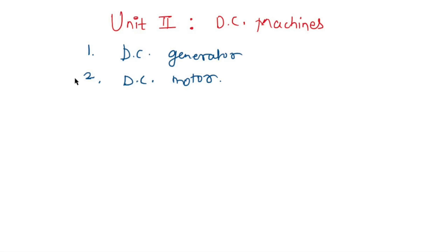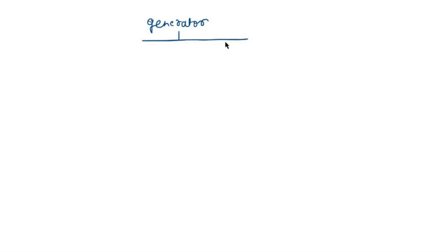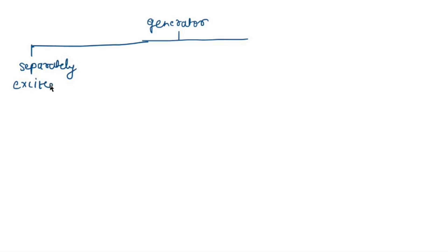Generators have 2 types. The first is separately excited generators, and the other one is self-excited generators.